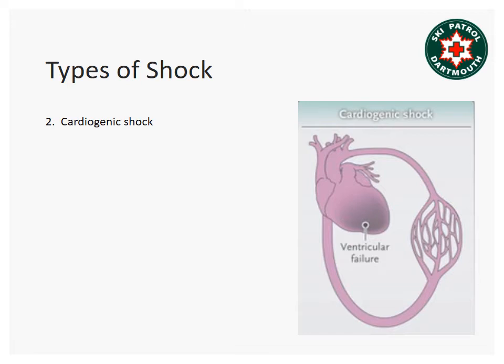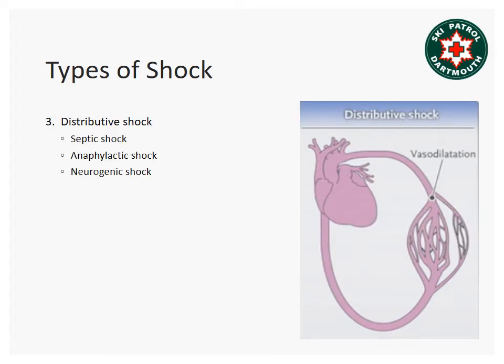Cardiogenic shock is a problem with the pump — the heart. If the patient has had a heart attack and their heart muscle is not pumping well, they'll have cardiogenic shock. Distributive shock is a problem with the blood vessels throughout the body. Septic shock is a type of distributive shock where the patient has a serious infection and the body responds by releasing chemicals that cause blood vessels to dilate. Anaphylactic shock is a life-threatening response to an allergen causing widespread vasodilation — too much space in the pipes for the blood.